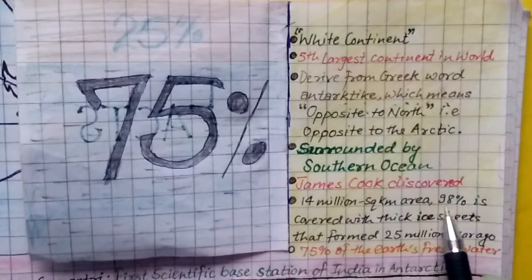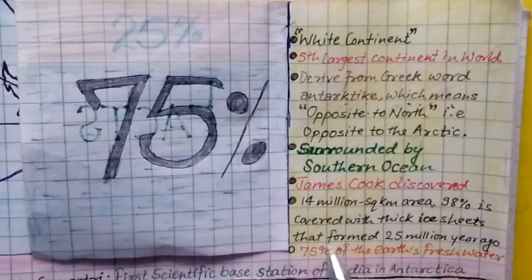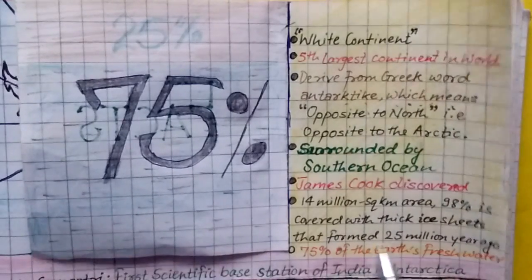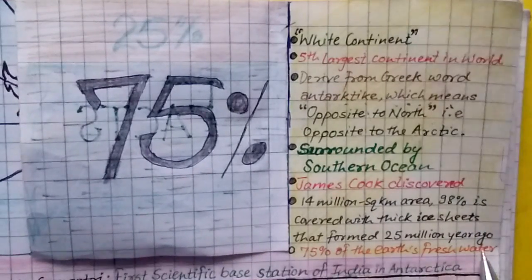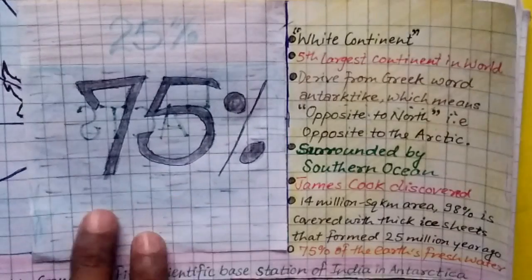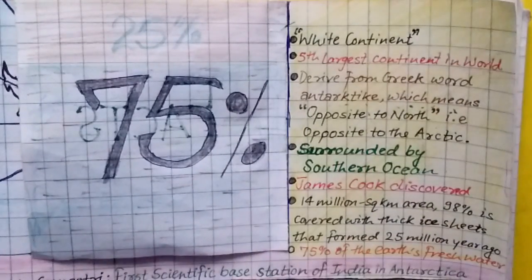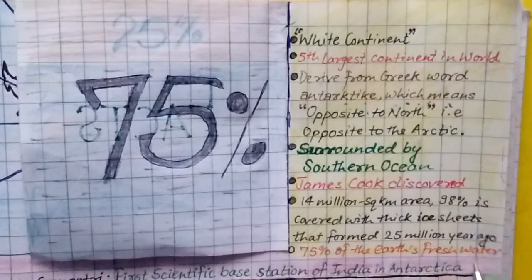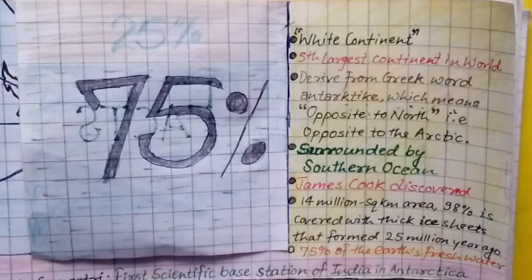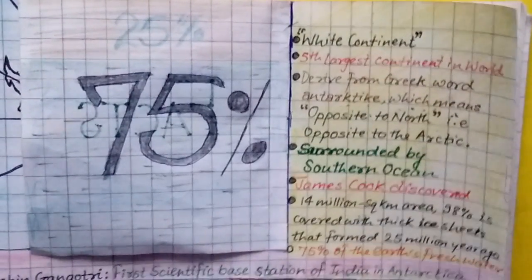98 percent of Antarctic is covered with thick ice sheets. It was formed 25 million years ago, and as already mentioned, 75 percent of Earth's fresh water is stored in Antarctic only.